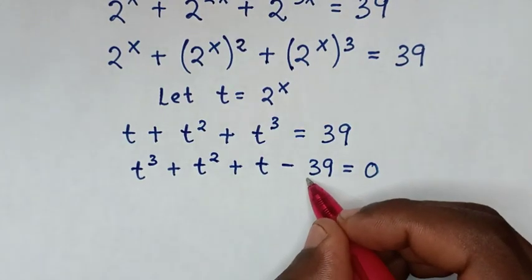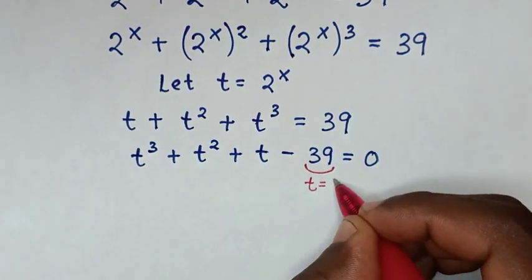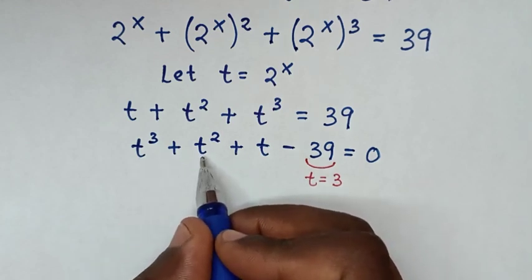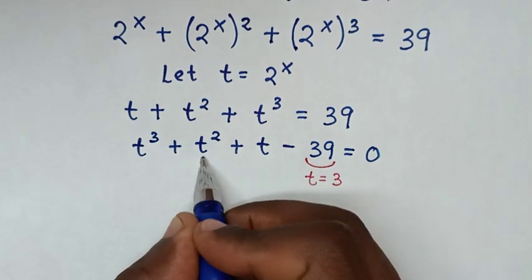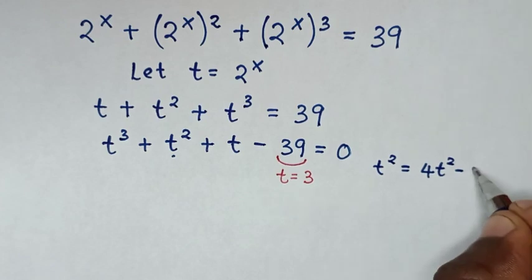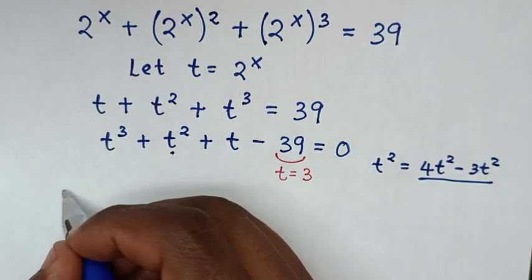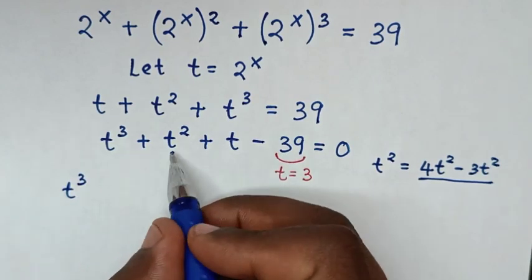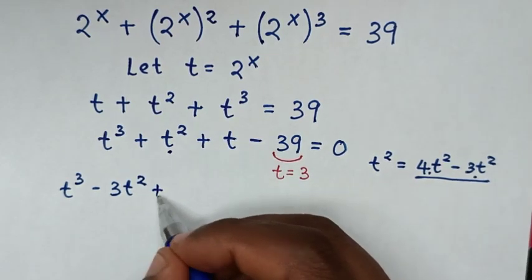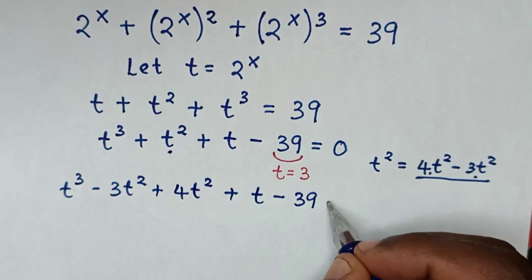From here, 39 is divisible by 3, so we test t = 3. To factor, we rewrite t^2 as 4t^2 − 3t^2 and substitute. Our equation becomes t^3 + (−3t^2) + 4t^2 + t − 39 = 0.